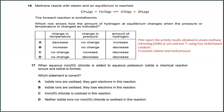Number 16. Methane reacts with steam and an equilibrium is reached; the forward reaction is endothermic. Which row shows how the amount of hydrogen at equilibrium changes when pressure or temperature is changed? Based on the activity results in steam methane reforming (SMR) at 500 and 600°C, the temperature increases while pressure is constant. Therefore the amount of hydrogen will be decreased. The answer for this would be B.